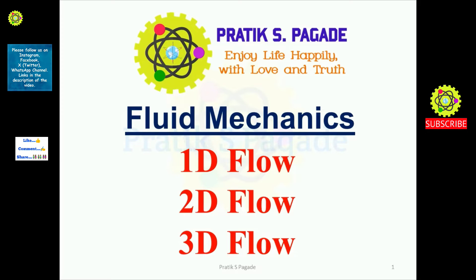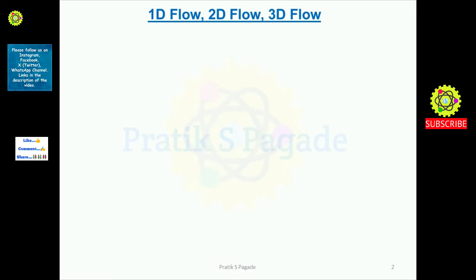Hi students, welcome. In this video we will study about one-dimensional flow, two-dimensional flow, and three-dimensional flow. Suppose this is an x space coordinate and the flow is along only this x space coordinate — at that time the flow is called as one-dimensional flow, and along this one-dimensional flow the velocity component is denoted by small u.